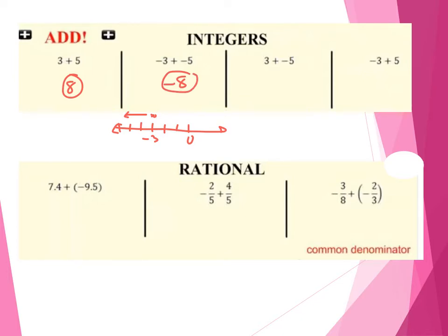Adding two negatives together is just like adding the numbers themselves, 3 and 5, and just making that more negative — so negative 8. Next, what happens when I add 3, a positive, plus a negative? Adding a negative — we've got double signs here — it's not 3 plus minus 5, but when you think about adding a negative, this is almost like saying 3 minus 5. So again, we're like subtracting. If you start with 3 and you take away 5, that's going to get us to negative 2. So adding a negative is just like subtracting.